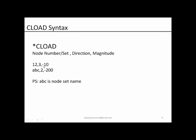Alternatively, you can create a node set — for example, an 'ABC' node set containing a series of nodes — and give that node set followed by the direction. In this example, direction 2 is the y-direction, and a magnitude of -200 Newtons is applied. The syntax is simply: *CLOAD, then a node number or node set, then direction, then magnitude.